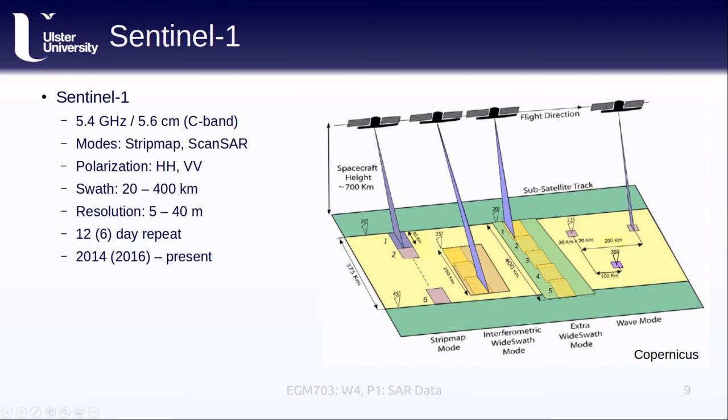The final SAR mission we'll look at is Sentinel-1, which we've already seen from the week-3 practical. Sentinel-1 operates at 5.4 GHz, or 5.6 cm, making this another C-band radar, and you might be noticing a pattern here. It operates in both STRIPMAP and SCANSAR modes, depending on where it is acquiring data. It acquires both horizontally and vertically polarized signals, with a swath width that varies between 20 and 400 km, and a resolution that varies from 5 to 40 m, depending on the acquisition mode. Sentinel-1 has a 12-day repeat, though with multiple satellites, the actual repeat time is 6 days for most of the globe. The first satellite, Sentinel-1A, was launched in 2014, Sentinel-1B was launched in 2016, and both of these are still operational. While we currently have two satellites in orbit, there are plans to launch Sentinel-1C and Sentinel-1D in the not-too-distant future. Sentinel-1 data are freely available from a number of places.